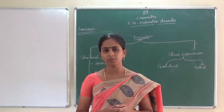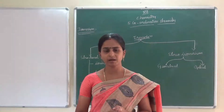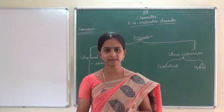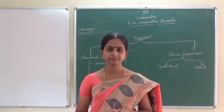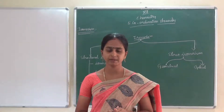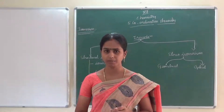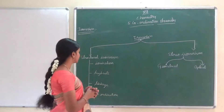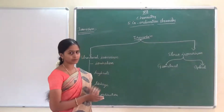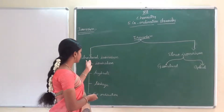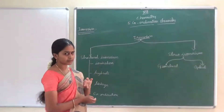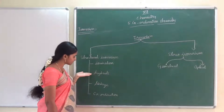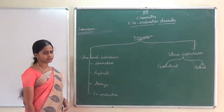Two or more coordination compounds will have the same molecular formula, but the ligands will be arranged in a different manner. Because of that, they will show different physical and chemical properties. Now we are going to see some types of isomerism in coordination compounds. The major classification is structural isomerism and stereo isomerism. In structural isomerism, we get ionization isomerism, hydrate isomerism, linkage isomerism, and coordination isomerism.